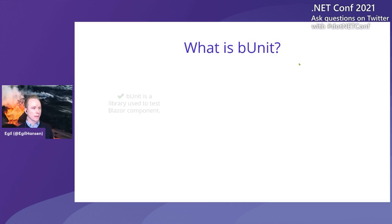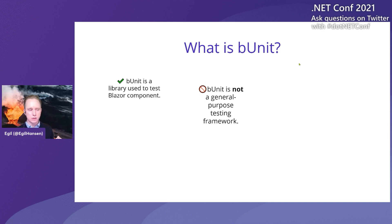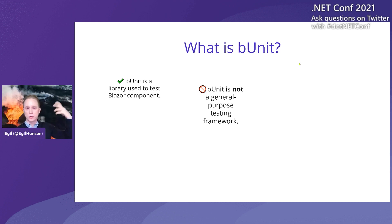So what is bUnit? bUnit is a library for testing Blazor components — and I want to highlight the word 'library' because bUnit is not a general purpose testing framework. A general purpose testing framework would be something like XUnit or NUnit, and you create a test project with those, then add libraries on top to help your testing — like Fluent Assertions, NSubstitute, or MOQ. bUnit falls into that same category of libraries you add on top of your existing testing infrastructure.